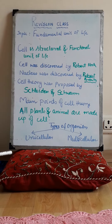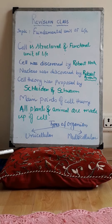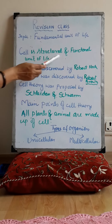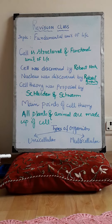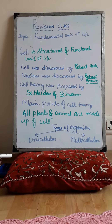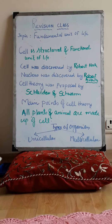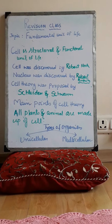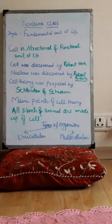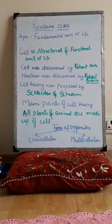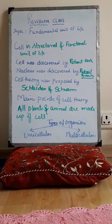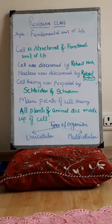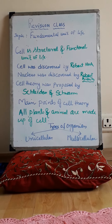From my previous videos you must have understood that cell is the structural and functional unit of life. Cell was discovered by Robert Hooke. The nucleus of the cell was discovered by Robert Brown. Cell theory was proposed by Schleiden and Schwan.